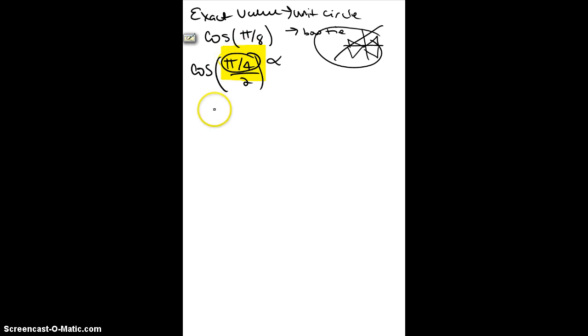And so I get plus or minus, and again, you can either put a question mark because you don't really know what sign you're going to use. Square root of 1 plus cosine alpha. Now in this case, my alpha is this guy. It's not your original because you're using the half angle formula. And so alpha is pi over 4. And that is all over 2.